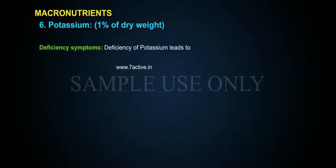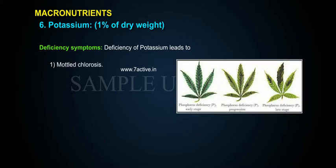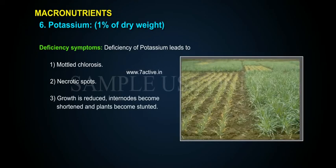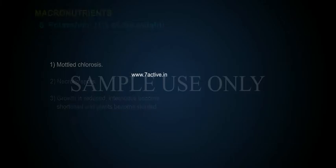Deficiency Symptoms: Deficiency of potassium leads to mottled chlorosis, necrotic spots, reduced growth, shortened internodes, and stunted plants.